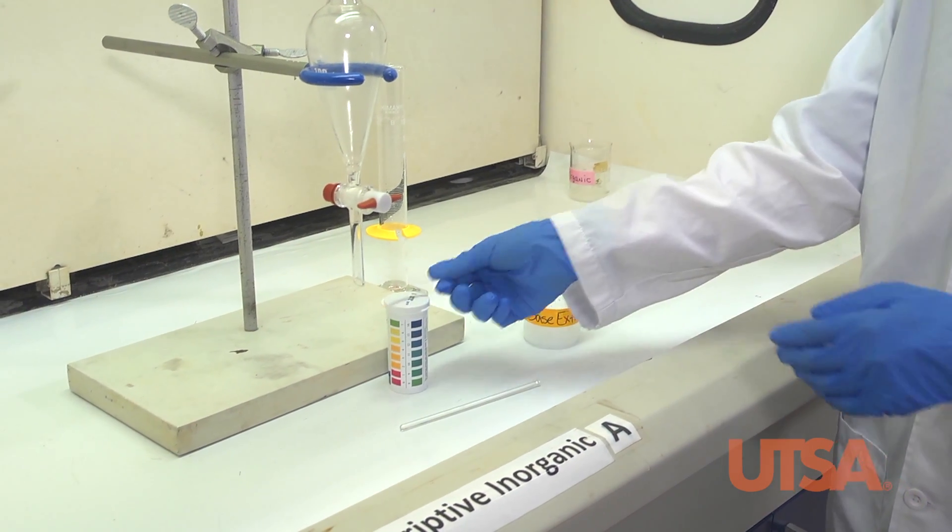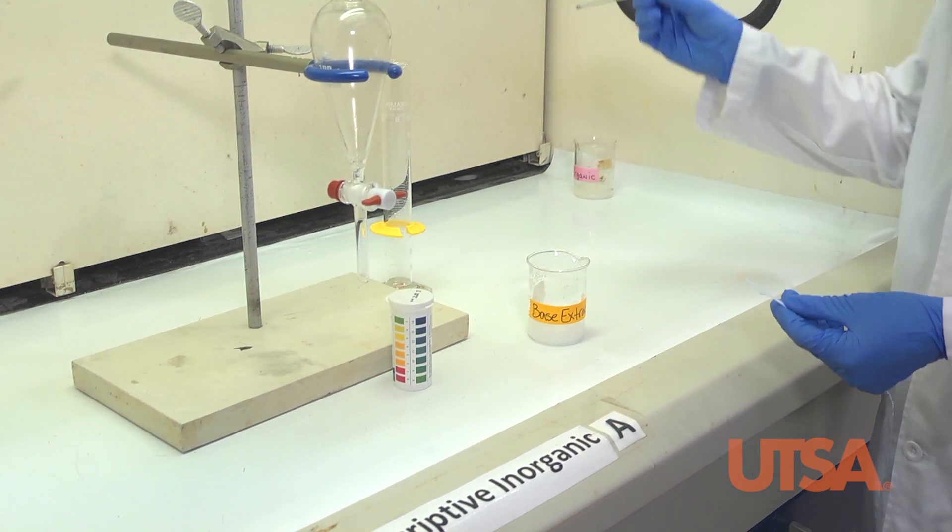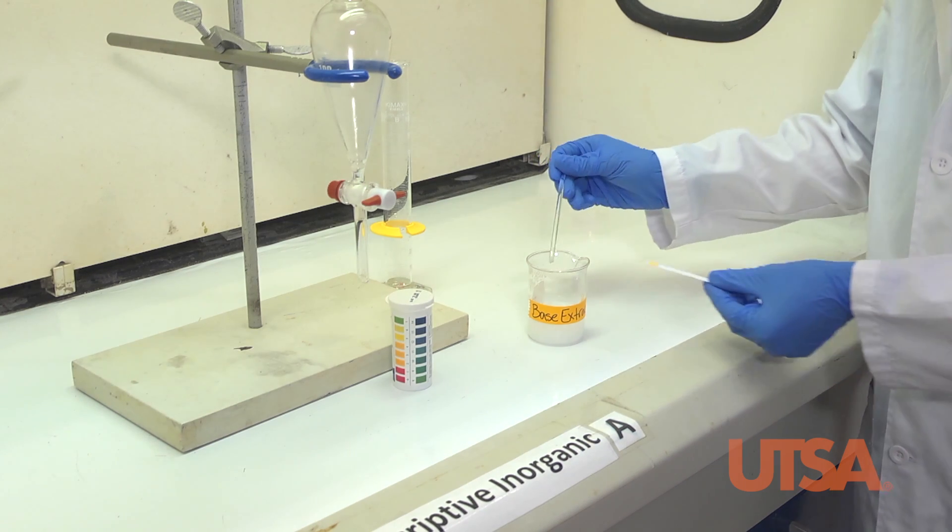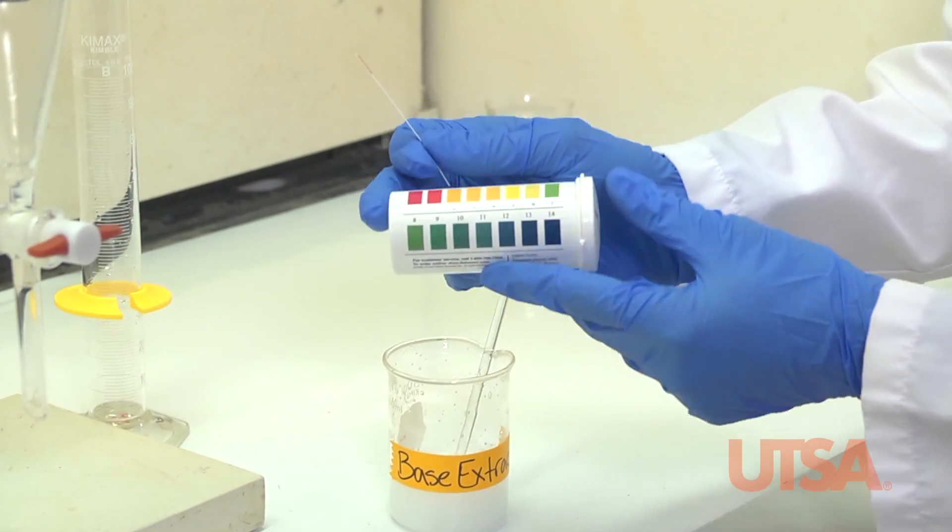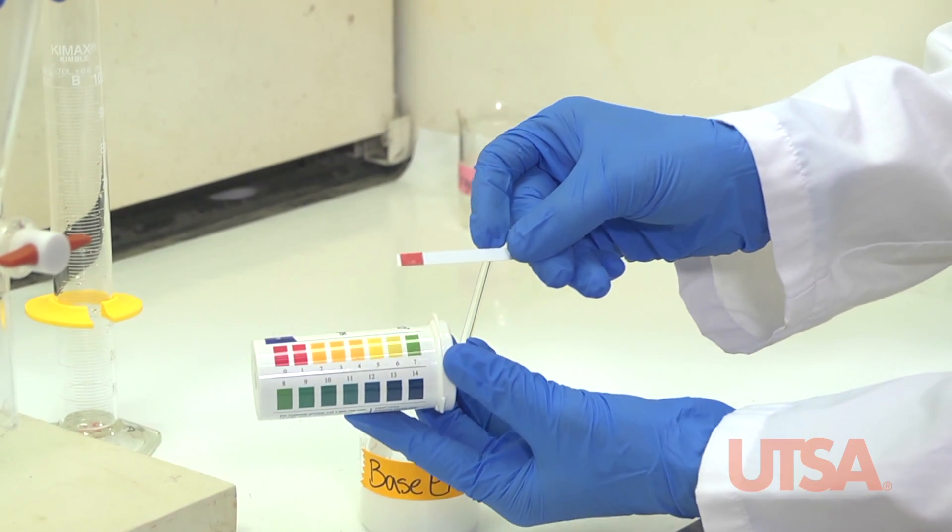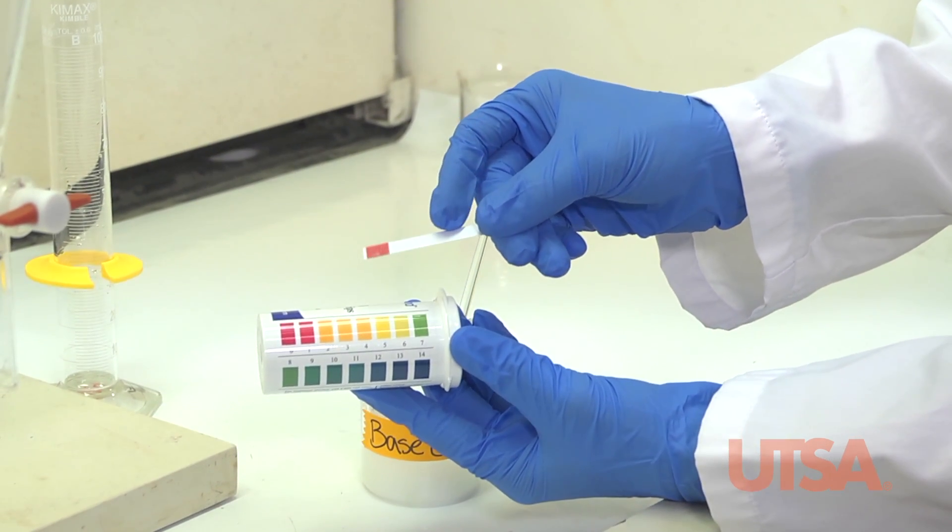Now we will check the pH. Using a glass stir rod, dab a little bit onto your pH paper and then compare it to the container to see that it is acidic.